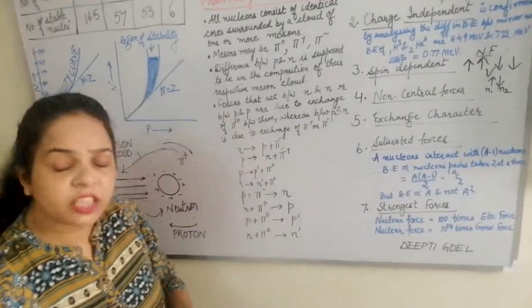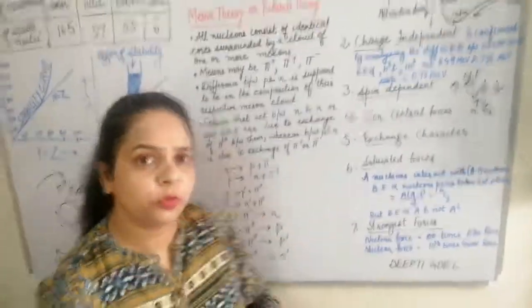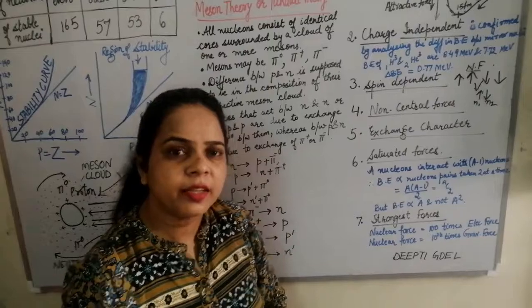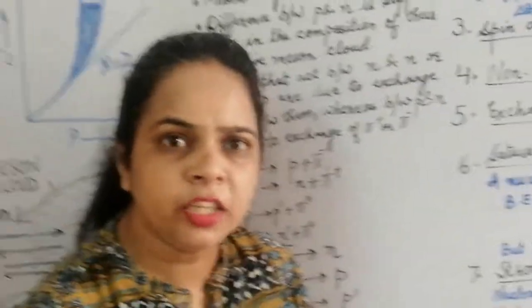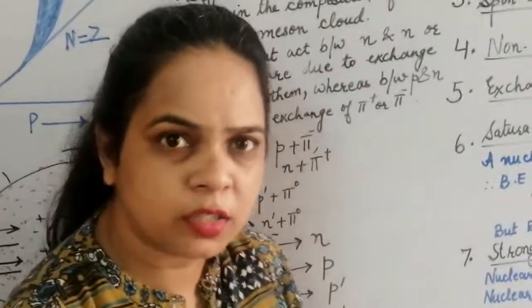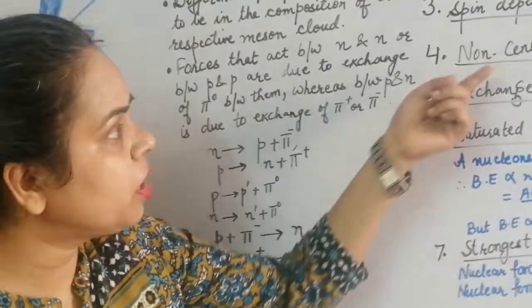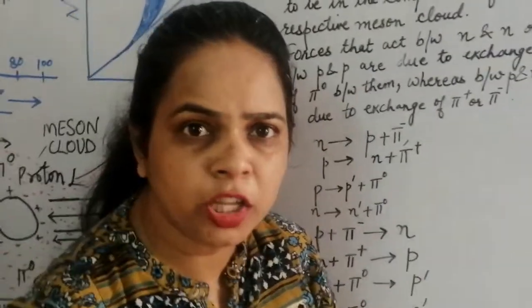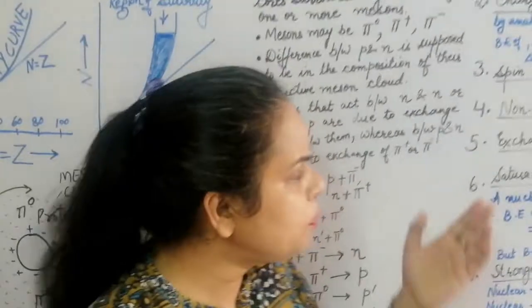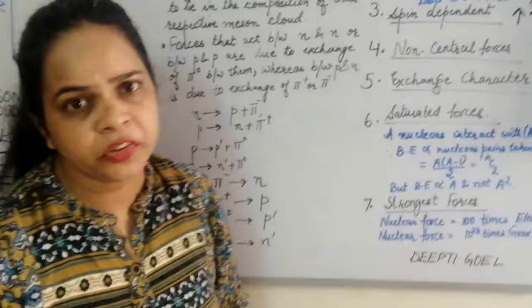The fourth property is that nuclear forces are non-central. Central forces act along the line joining the centres of the 2 particles. The strong forces or Yukawa forces were not acting along the line joining the 2 nucleons — they may be more regarded as partial non-central forces.